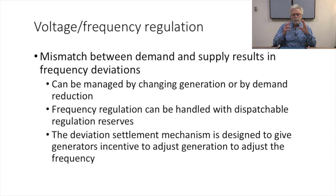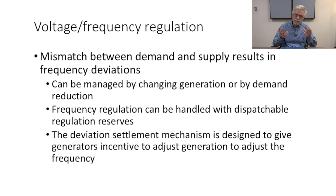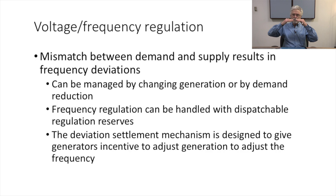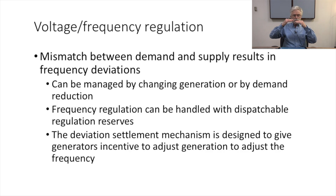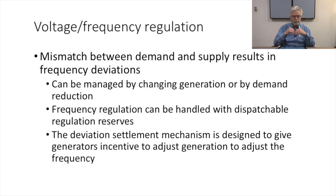Let's talk about voltage and frequency regulation. Our forecast will always differ a little from what actually happens — even a 15-minute-ahead forecast will have some deviation. There's always a mismatch between demand and supply, and that results in the frequency of electricity on the grid deviating from the target 50 hertz. Deviation too far from 50 hertz is damaging, so there must be grid-level management of voltage and frequency regulation services.